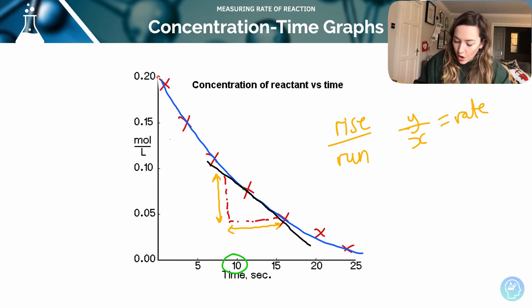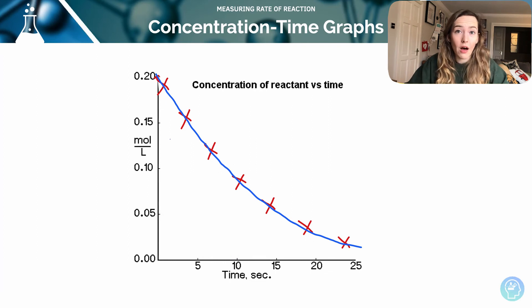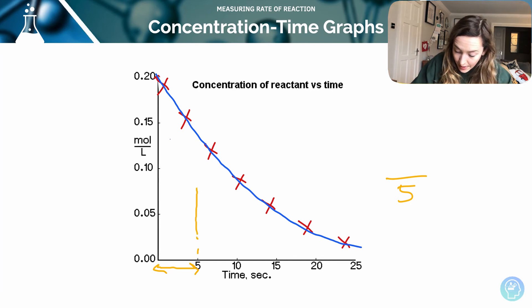You may also get asked to calculate the rate over the first five seconds, for example. In that particular case we want to take all of the values into account. We don't need to draw a tangent. So if we go up, we know that time - the run - is going to be over five. So we just want to work out what the change was in that given time period.